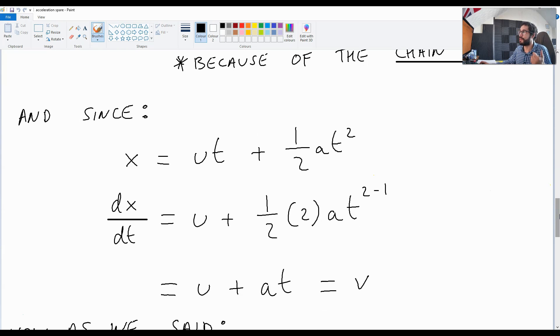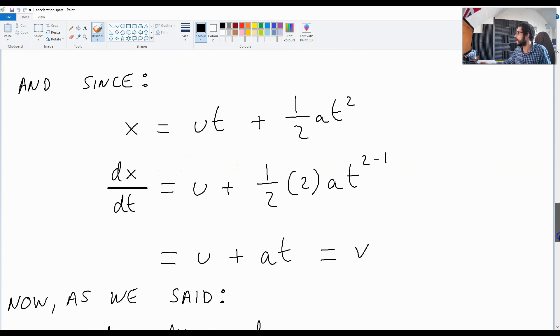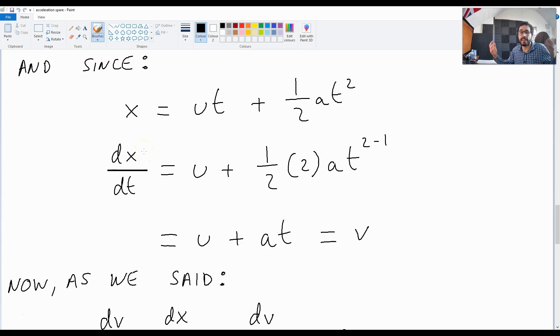And also because x is ut plus half at squared, which gives us dx over dt, which is u plus at, which is v.